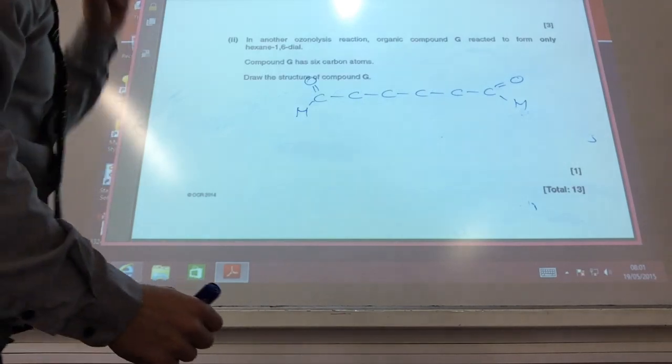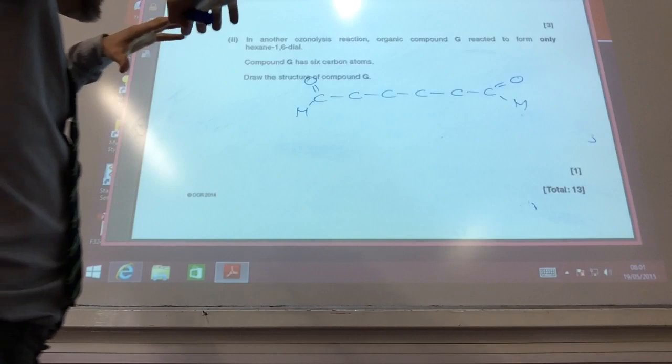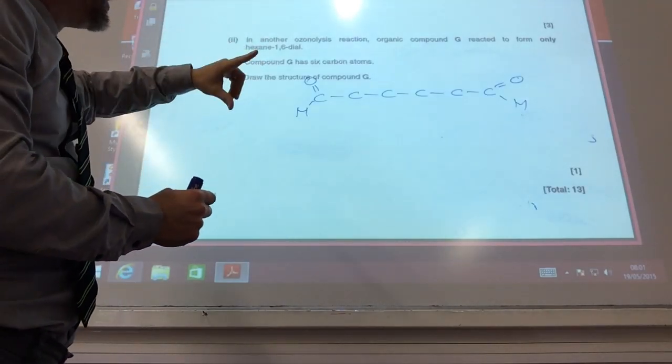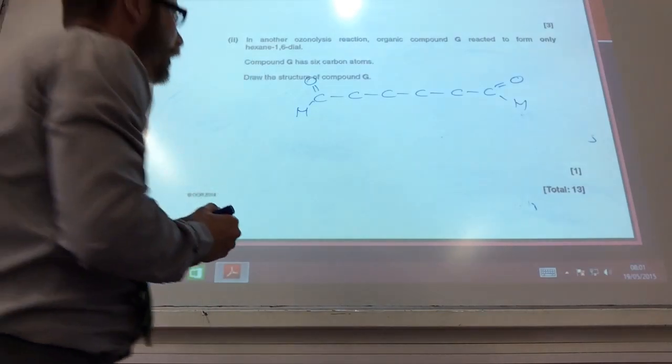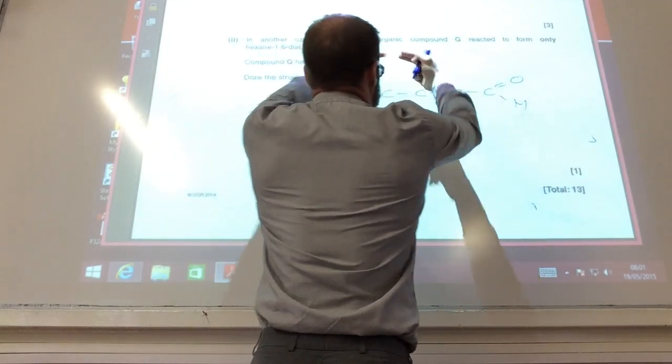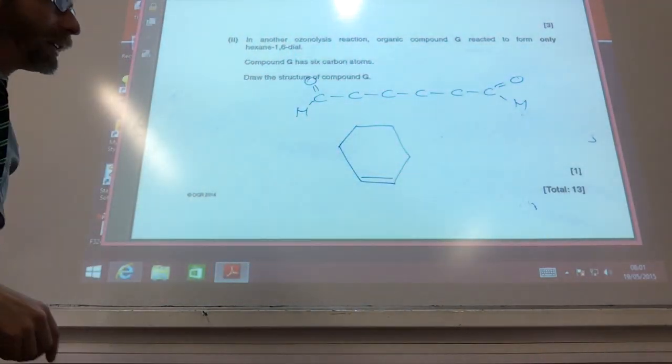All right, this is a tricky one. I've now only produced one product. Because I've only produced one product, it must have originally come from a ring, because if you look at the other ones, I always produce two because I broke the molecule in half. So what you need to do is, it's going to be a 6-membered ring, and if you wrap these two together, you'll end up with a double bond there.